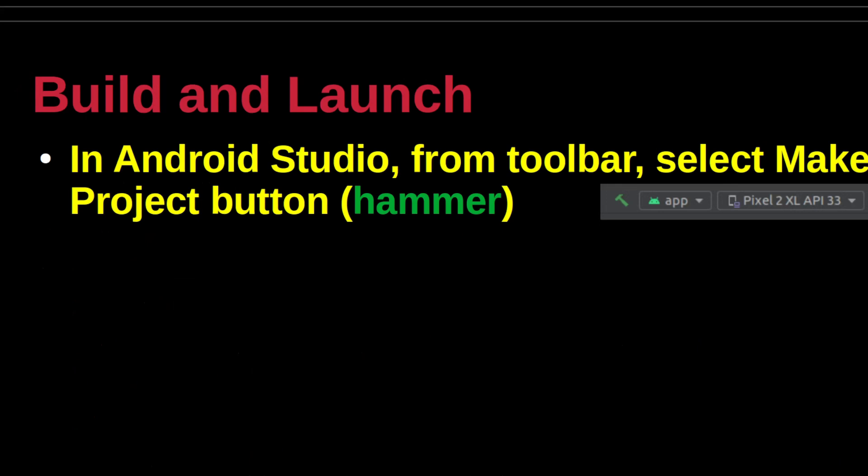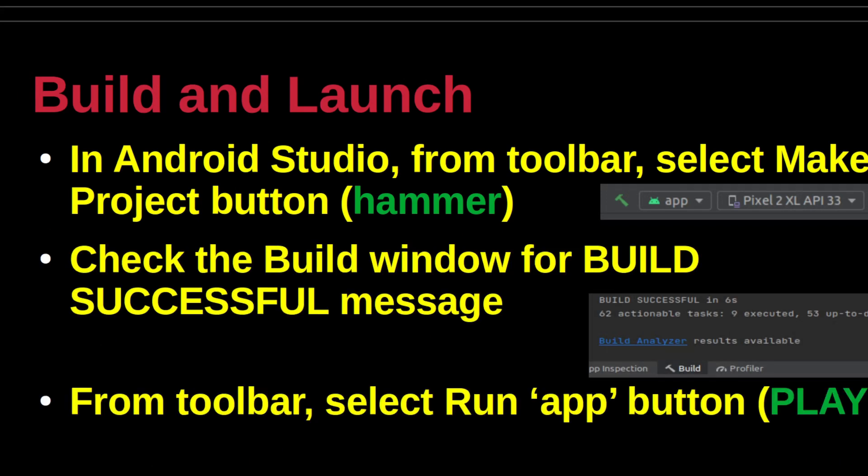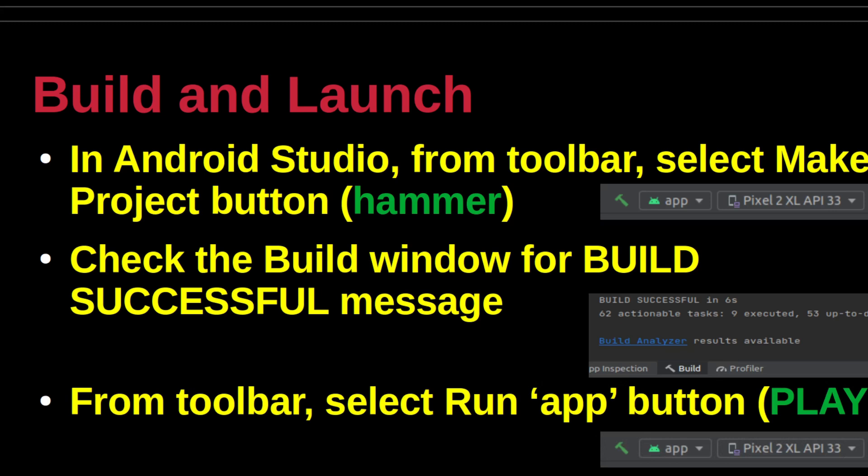In Android Studio, from the toolbar, select the Make Project button — it is the one with the green hammer. Open the Build window and review the messages. If everything went well, a build successful message should appear towards the end of the listing. This operation is simply a sanity check. From the toolbar again, select the Run App button, which is represented by the classic play button in green. Assuming you have previously configured your Android Studio for virtual machines, the app should display the Hello World message. You can also run the app on a physical machine.